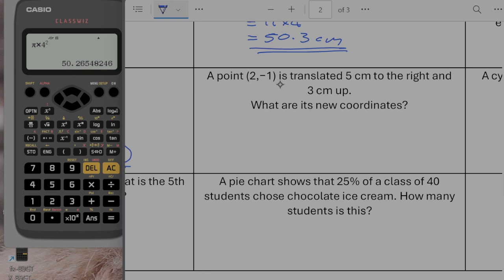A point 2 minus 1 is translated 5 to the right and 3 centimetres up. What is the new coordinate? So I want to do 2 and then if I start with my x. So my x is my cross. So I'm going to go 2 plus 5 for my x coordinate. And my y coordinate is going to be minus 1 plus 3. So my new coordinate is going to be 7, 2.